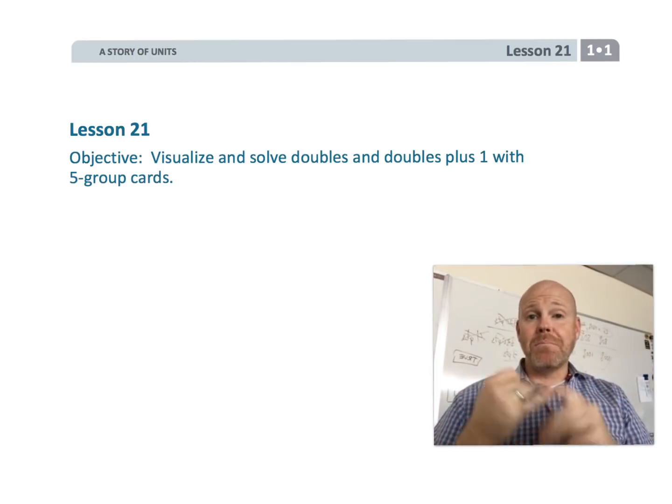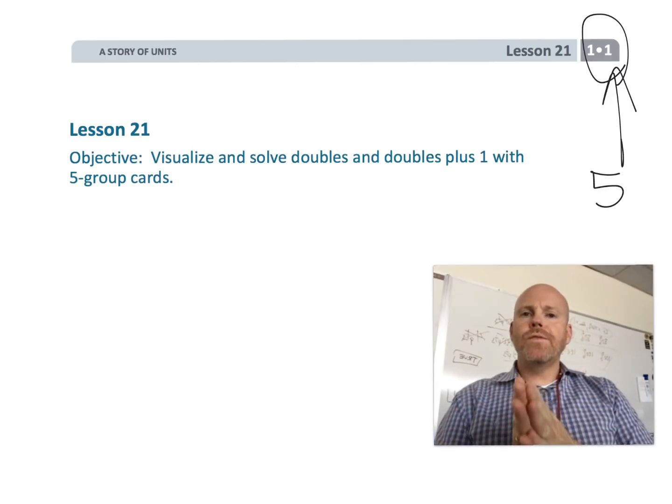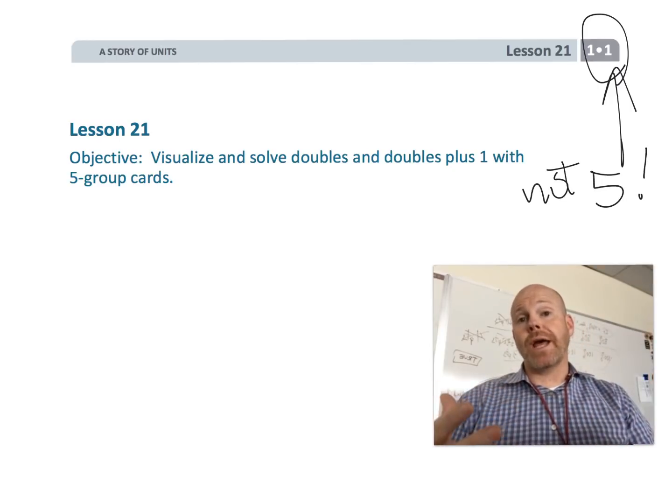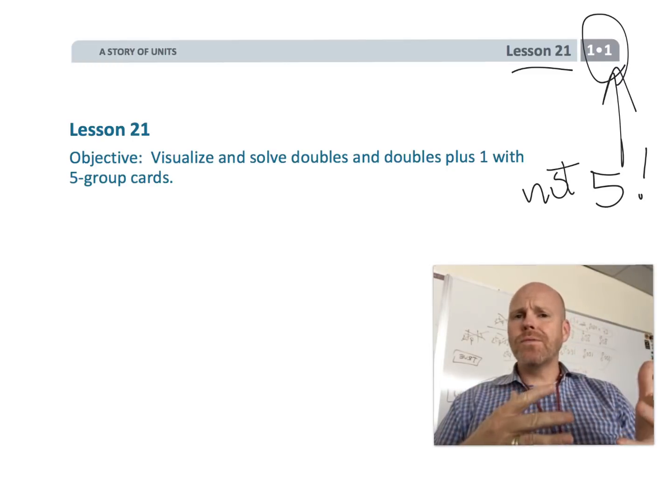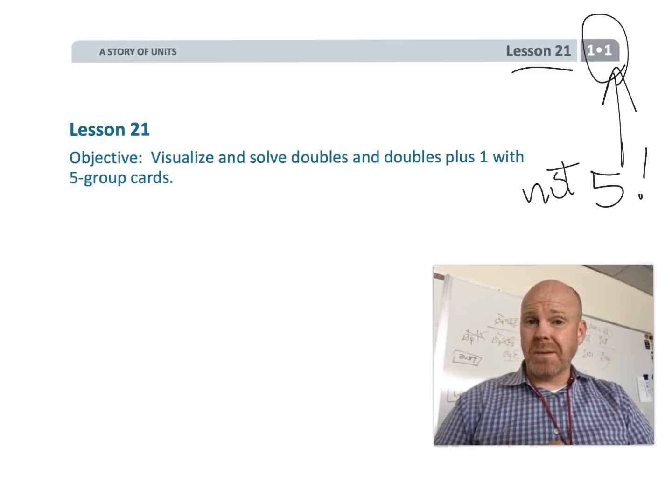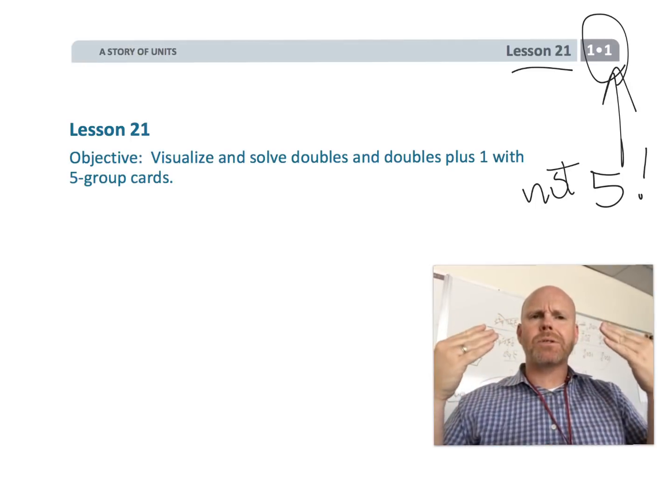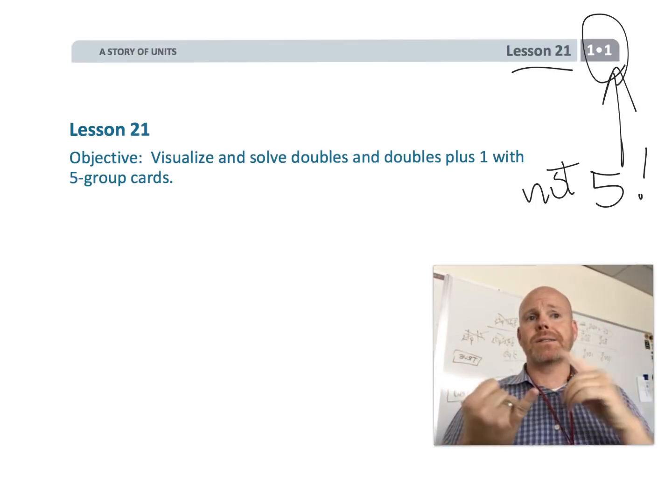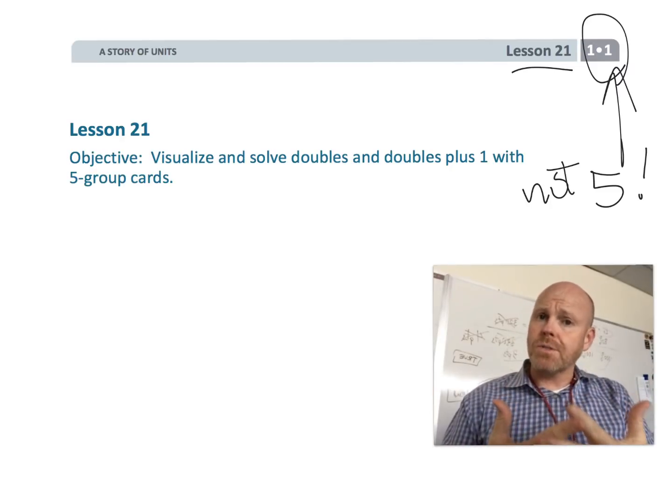Alright, this is first grade module 5 lesson 21. In this lesson we're moving on to a new counting strategy. Previously we were doing the count on method, now we're moving on to doubles and near doubles. This lesson begins the process of allowing students the opportunity to visualize doubles and doubles plus one, near doubles, with five group cards.